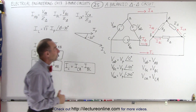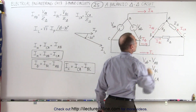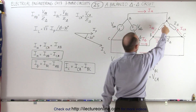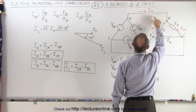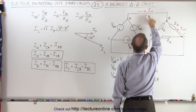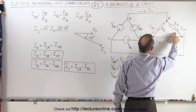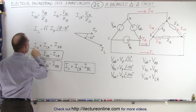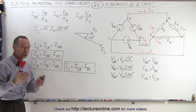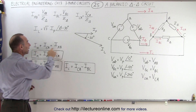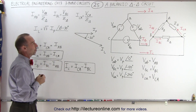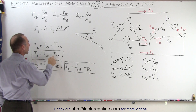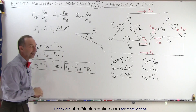We can also relate the line current and the phase currents by using Kirchhoff's current rule. We can take any of the three branch points — for example, branch point A. The currents going into that branch point are IA and ICA, and leaving the branch point is IAB. So we can say that IA plus ICA equals IAB. Solving for IA, we get IA equals IAB minus ICA.